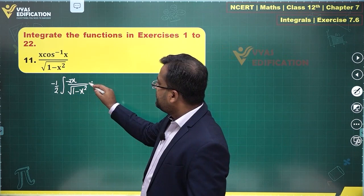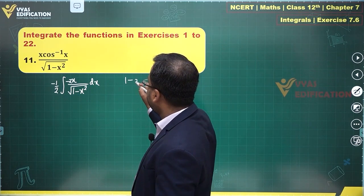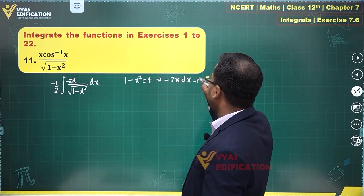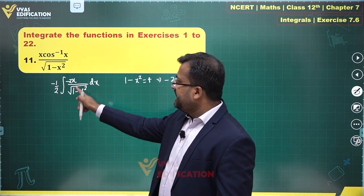So 1 minus x square can be substituted as t. I will substitute 1 minus x square as t and get minus 2 dx as dt. This becomes dt upon root t.